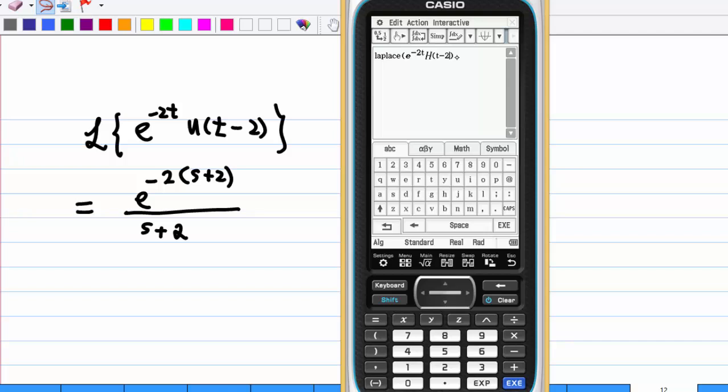Okay, then move to the right, enter comma, this is the function of t. And then comma again, I want to take Laplace transform, so I will get a function of s. Then close the bracket and execute, and this is the answer.